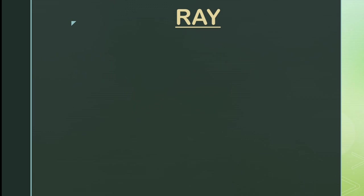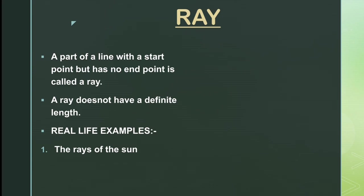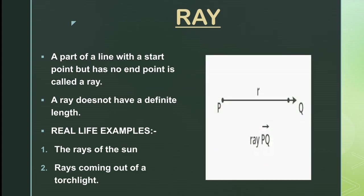Next comes rays. Before we start, can you tell me why do we say sun rays? Why don't we say the light of the sun? It is because the sun is a point from which the light source scatters all around indefinitely. So a ray can be defined as a part of a line with a start point but no end point. A ray does not have a definite length. Real life examples are the rays of the sun and rays coming out from a torchlight. As you can see, P is the point from which the ray PQ extends endlessly in one direction. So PQ is a ray.